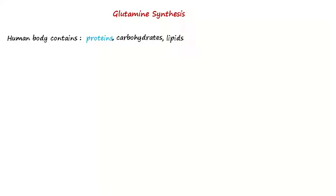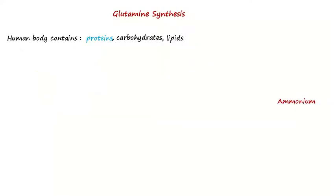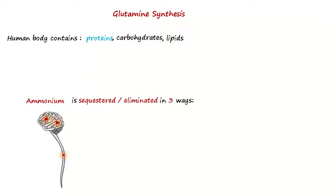Notice the blue highlight for proteins. If a protein undergoes degradation, amino acids will be released. These undergo catabolic reactions with a final product named ammonium. Ammonium is very toxic for the central nervous system, and the body is adapted to sequester or eliminate it in three ways: the urea cycle, glutamine synthesis, and asparagine synthesis.